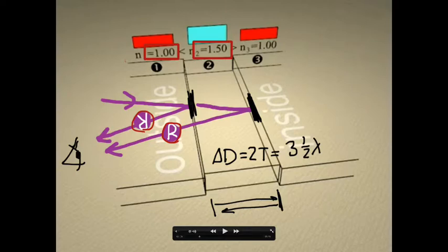We remember that velocity, in this case the velocity of light, is equal to the frequency times the wavelength. When the light wave changes medium, the frequency does not change. So in this case, the velocity decreases when it goes into the film, the wavelength will have to decrease as well.